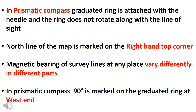In the Prismatic compass, the graduated ring is attached with the needle. The north line of the map is marked on the right-hand top corner.